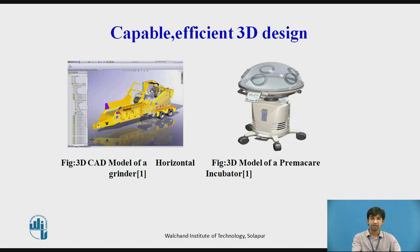When evaluating CAD software, find out how efficiently each package creates the types of products your company makes. For example, if your company makes sheet metal parts, pay attention to the special tools for creating them and automatically generating flat patterns. If your firm designs stylish products, look at the tools for creating freeform surfaces and blends between them. Designers of machinery should see how easy it is to assemble a large number of parts and insert purchased parts such as fasteners from a library.